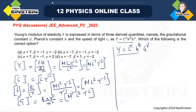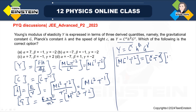Now, if we put these dimensions into the dimensional formula, on the left-hand side we get M L to the power minus 1 T to the power minus 2 — the dimension of Young's modulus. For the speed of light, L to the power alpha, T to the power minus alpha. For H, M to the power beta, L to the power 2 beta, T to the power minus beta. And for G, M to the power minus gamma, L to the power 3 gamma, T to the power minus 2 gamma.